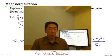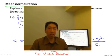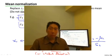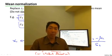So now you know about feature scaling, and if you apply this simple trick, it can make gradient descent run much faster and converge in a lot fewer iterations. That was feature scaling. In the next video, I'll tell you about another trick to make gradient descent work well in practice.